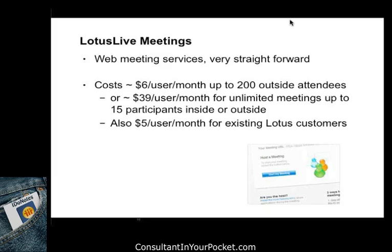For Meetings, you get $5 a user a month if you're an existing Lotus customer, but it's only up to 200 outside attendees. Or you could do unlimited meetings for only up to 15 people inside or outside. If you choose the $5 or $6 option, you get into questions about who's attending the meeting — is it an internal person or external? There's a whole bunch of things inside of that, so keep that in mind when doing pricing.